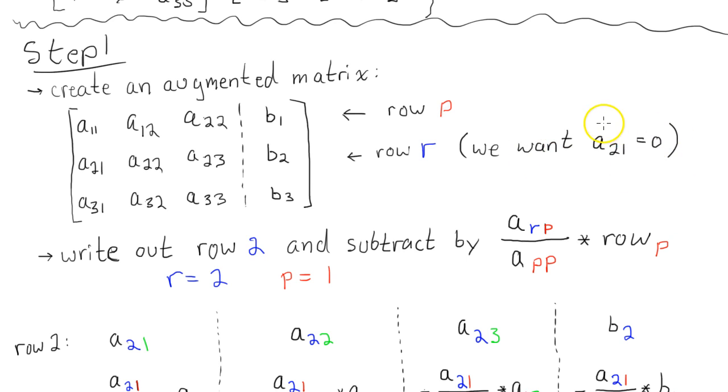And we, again, want A sub 2, 1 equal to 0. So the process is this. We're going to write out row 2, and then subtract by A sub R, P, divided by A sub P, P. And then multiply that by each element of row P.